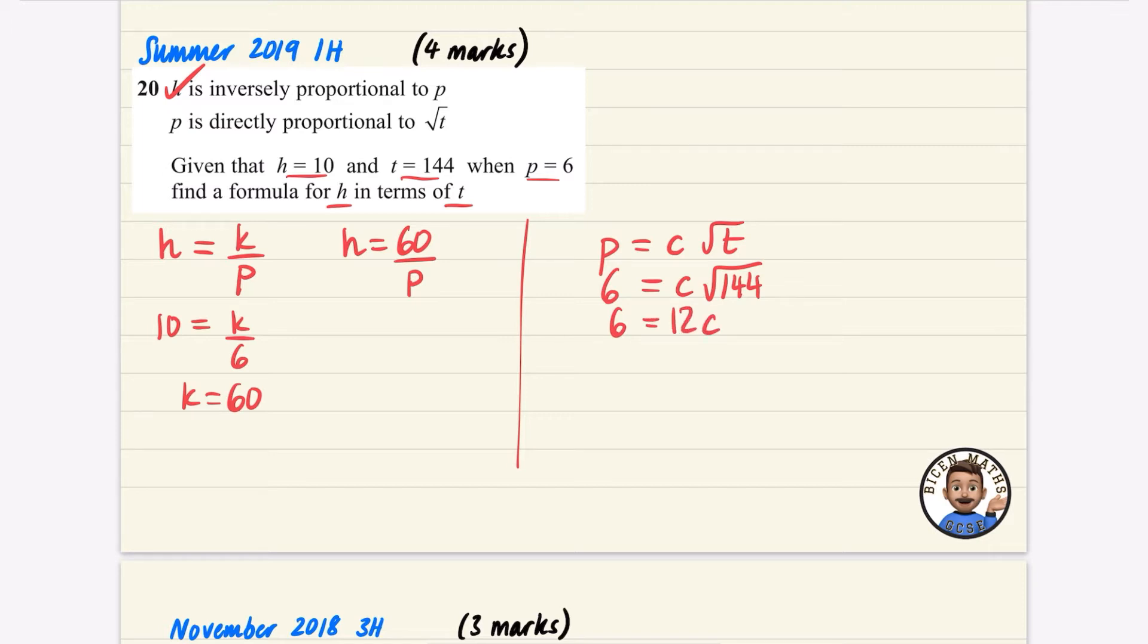The square root of 144 is 12. So in this case, we've now got 6 divided by 12, which is a half. So C is equal to a half, meaning that the formula for this one, this one over here, is that P is equal to a half times the square root of T.